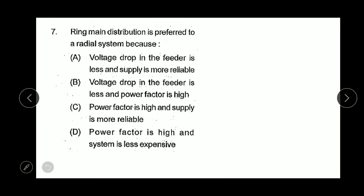Next question: the ring main distribution is preferred to a radial system because voltage drop in the feeder is less and supply is more reliable. This is the preferred answer.